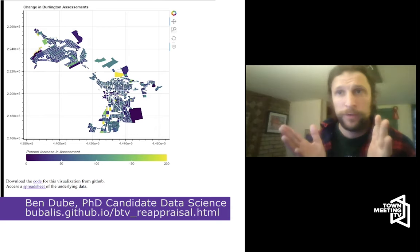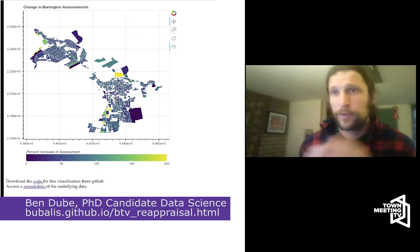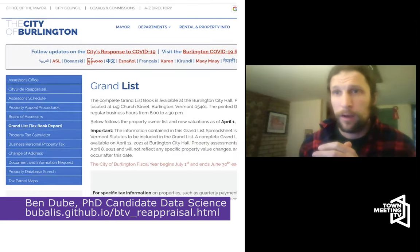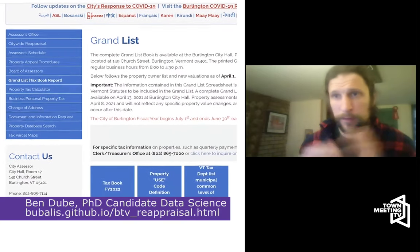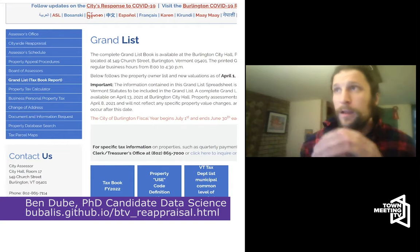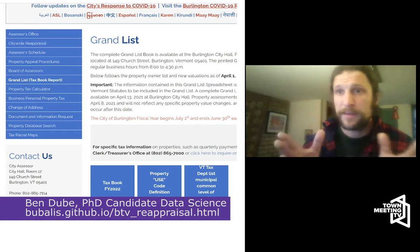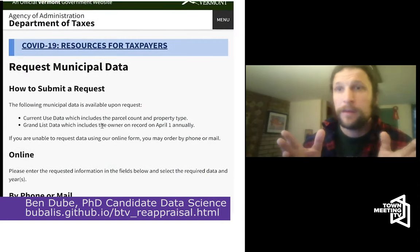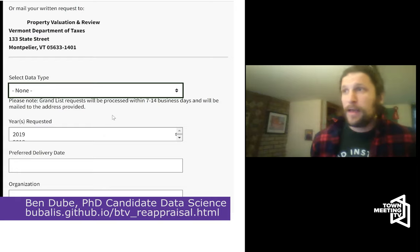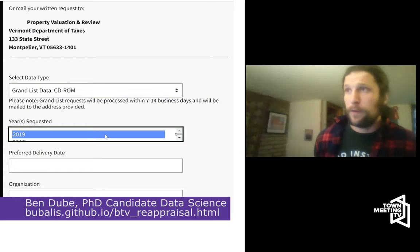I spent about an hour and a half procrastinating to make a little tool to help folks visualize it. I linked two different data sets, which is a pretty common thing to do. I started with a spreadsheet the city had on their website, and then I linked that with a data set from the state of Vermont — a map of every parcel in the state. I only needed the ones in Burlington, so I filtered them down and linked the records between those two.